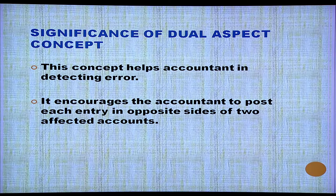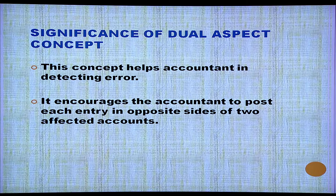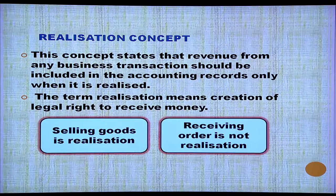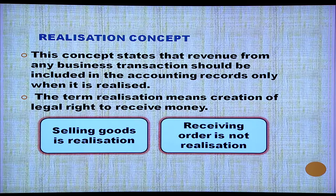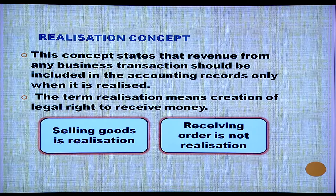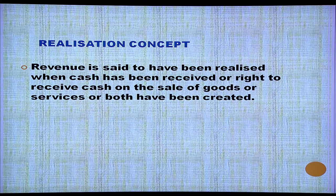The dual aspect concept has certain significance: it helps the accountant in detecting errors, and it encourages the accountant to post each entry on the opposite sides of two affected accounts. Coming to the Realization Concept. This concept states that revenue from any business transaction should be recorded in the accounts only when it is realized. The term realization means creation of a legal right to receive money. Selling goods is realization; receiving an order is not realization. Revenue is realized when cash has been received or the right to receive cash on the sale of goods or services has been created.